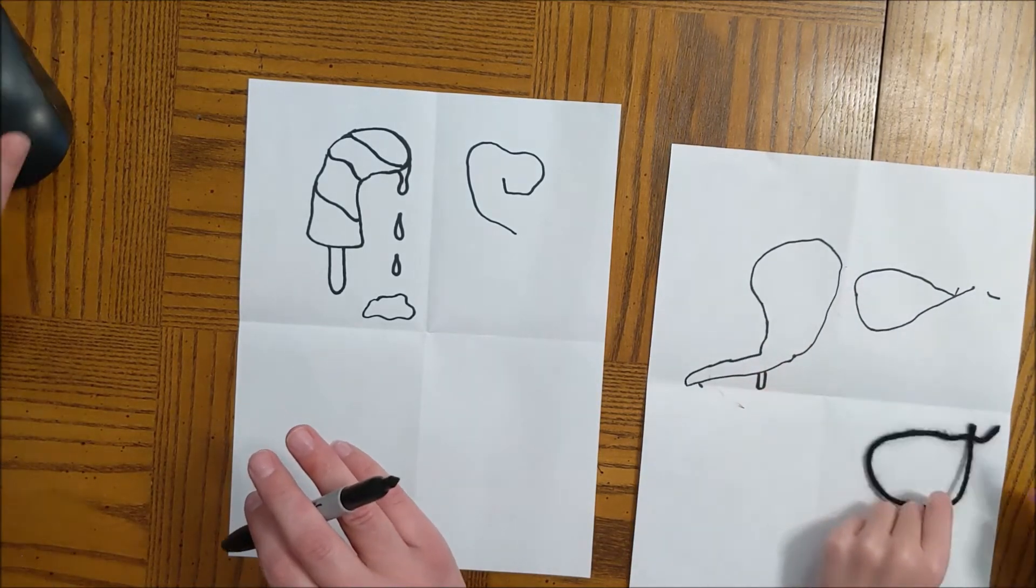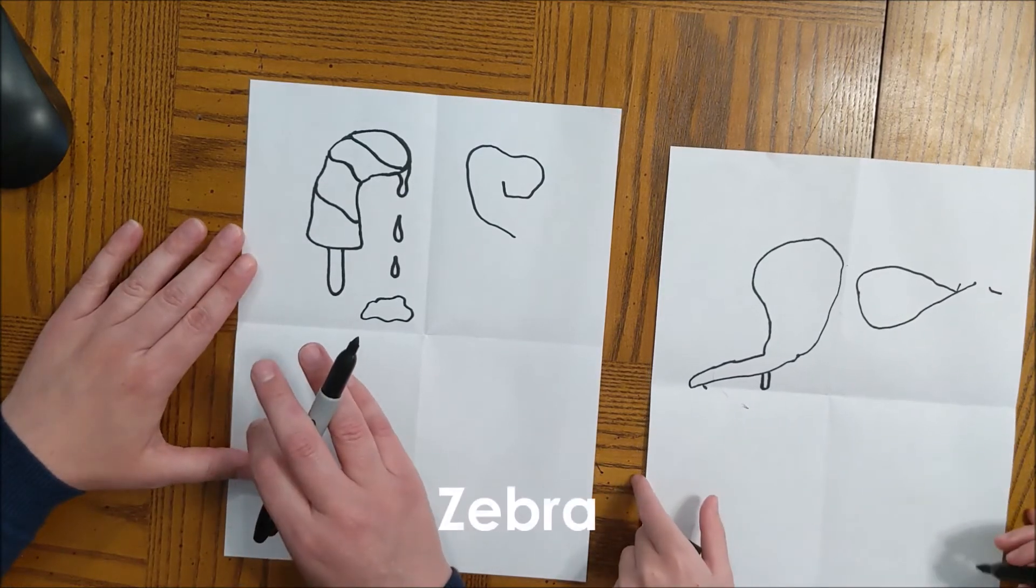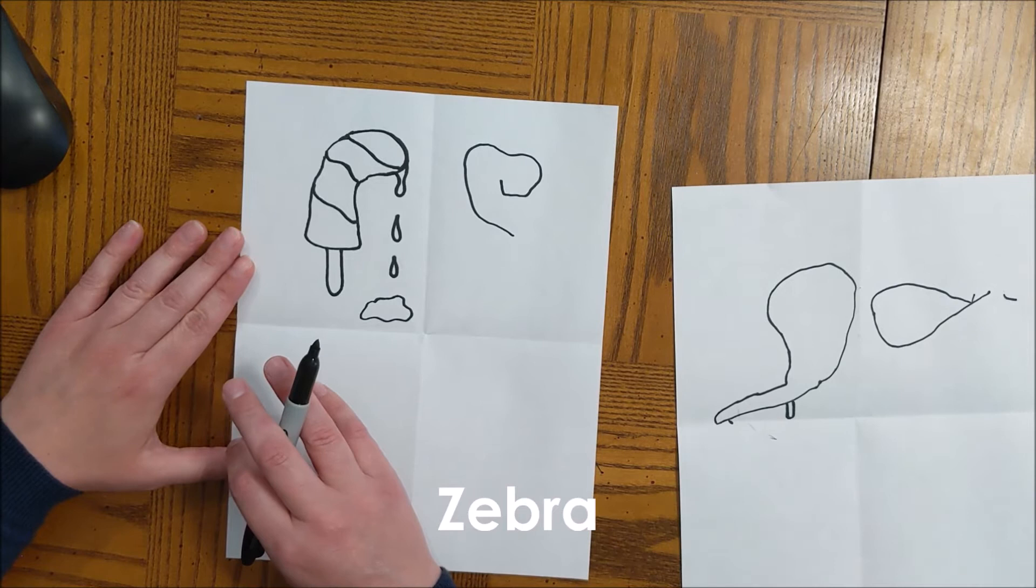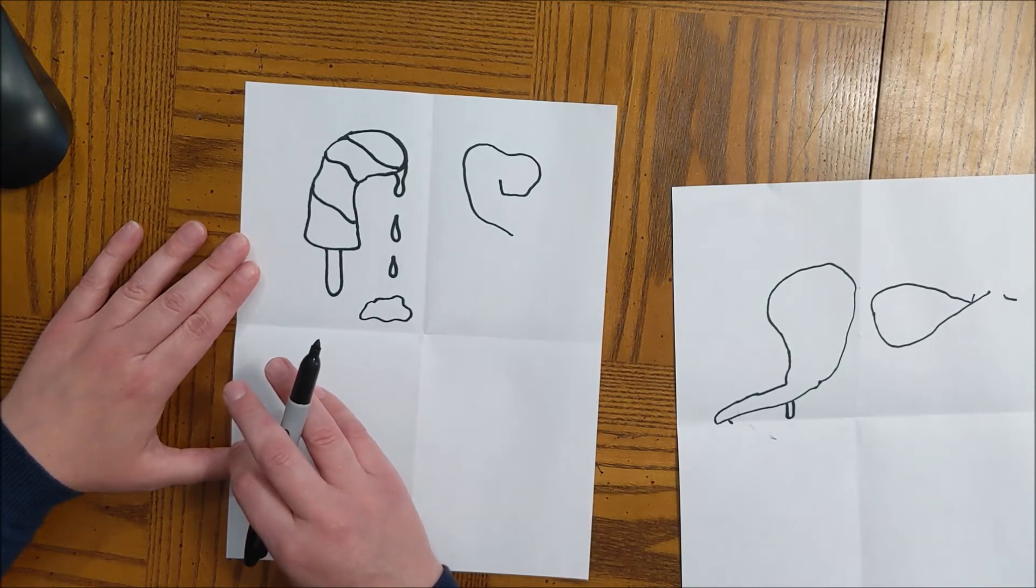Okay, I'll trace that squiggle. And now we're going to get our word. It says zebra. So somehow we're going to turn this into a zebra. It looks more like a chicken.